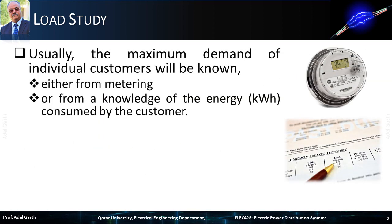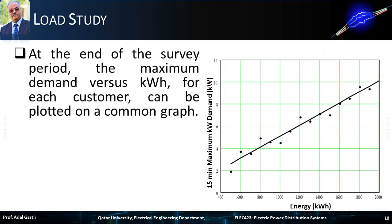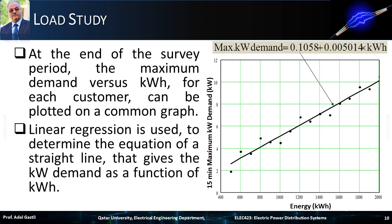Usually the maximum demand of individual customers will be known, either from metering or from a knowledge of the energy consumed by the customer. Some utility companies will perform a load survey of similar customers in order to determine the relationship between the energy consumption in kilowatt-hours and the maximum kilowatt demand. At the end of the survey period, the maximum demand versus kilowatt-hour for each customer can be plotted on a common graph. Linear regression is used to determine the equation of a straight line that gives the kilowatt demand as a function of kilowatt-hour.